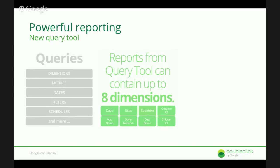Dimensions are slices applied to the data. This could be web properties, countries, creative IDs, or app names. You can pick from several different dimensions and run reports that include multiple dimensions. For example, if you want to see reporting for your purchases by country or different app names, you can see that, and for each combination of app name and country you'd be able to see the reporting data. You can layer in multiple dimensions.